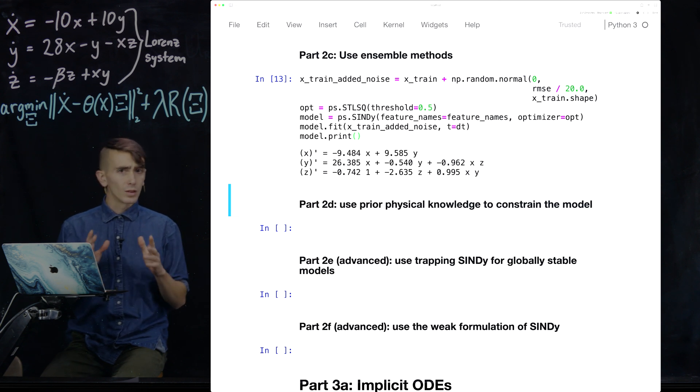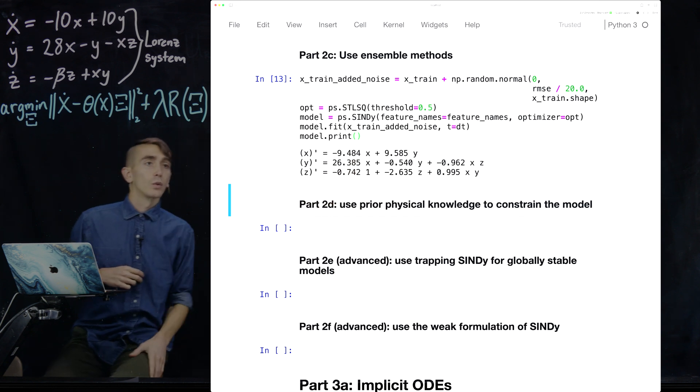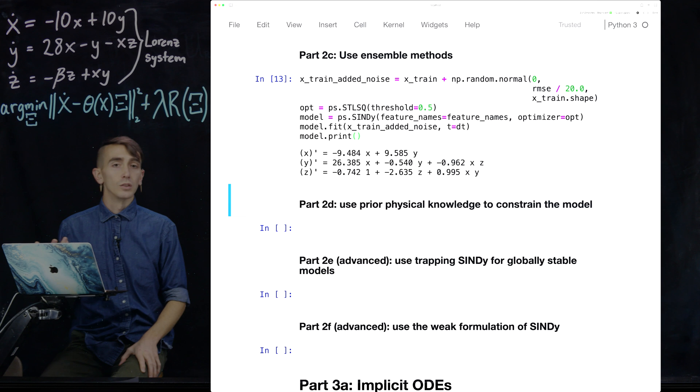You can see it's capturing the right dependence for each of the terms, but some of the terms are getting worse. For instance, the minus y term in the second equation is now about minus 0.5. So things are getting a little bit worse, but it's still roughly getting the right model.